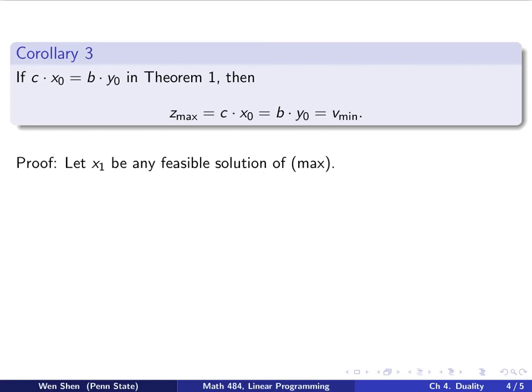Let's see how we can prove such a claim. Let's pick x1, which is any feasible solution of the max problem. Then we will use the result in theorem 1. Theorem 1 says if this is a feasible solution for the max problem, then c dot x1, the feasible solution, is less than b dot y0, which is a feasible solution for the dual. This holds for any x1.